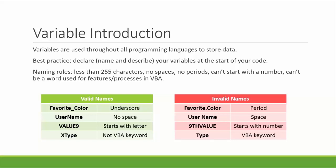Generally speaking, it's best practice to declare your variables — which means to name and describe them — at the top of your code rather than mixing them in throughout your code, in case you need to go back and change something later.